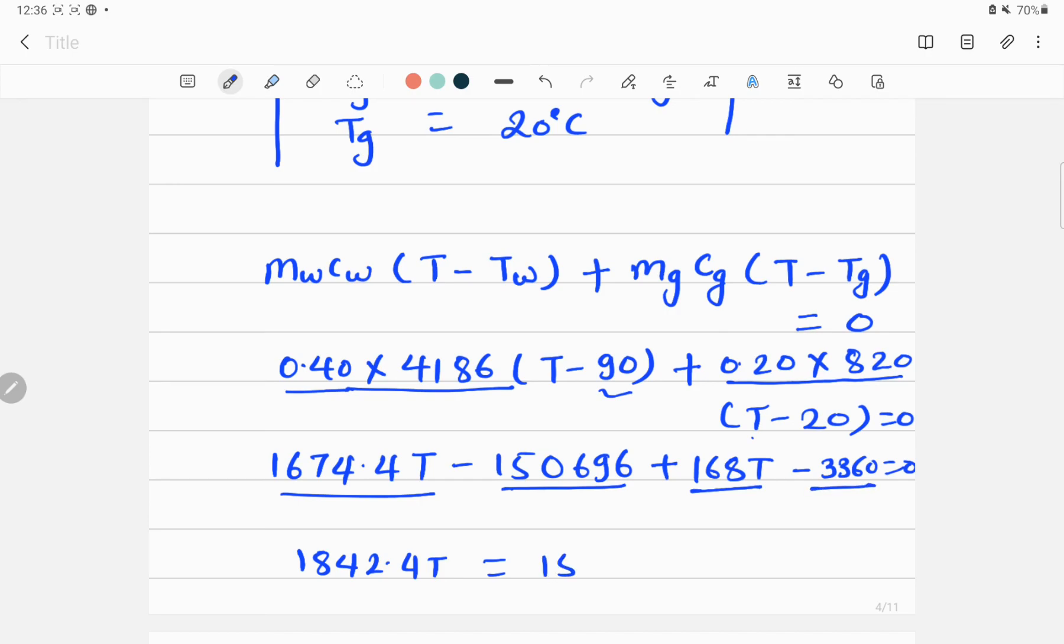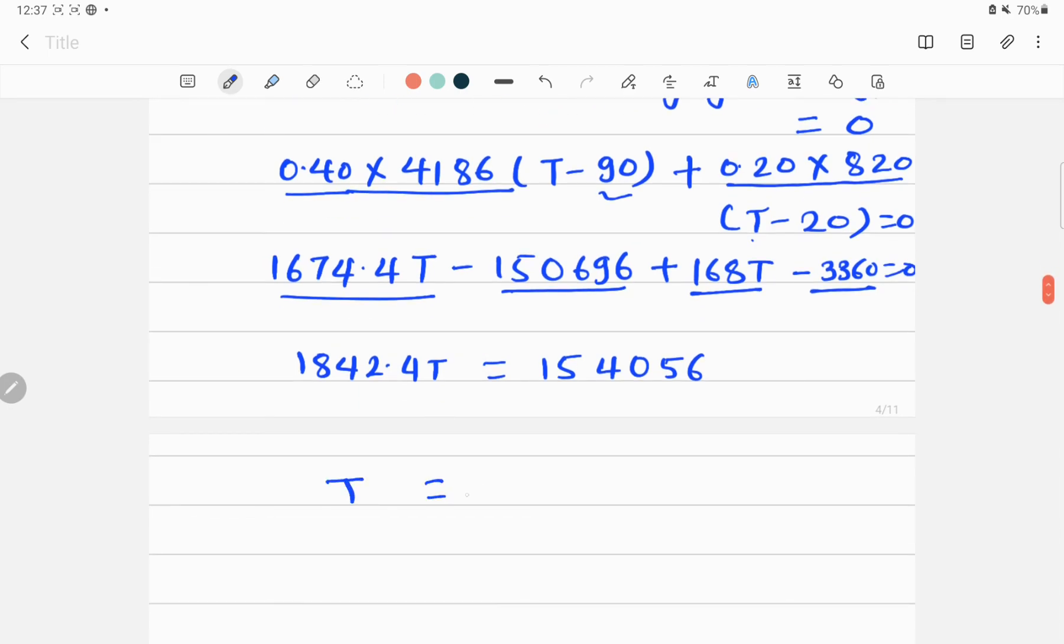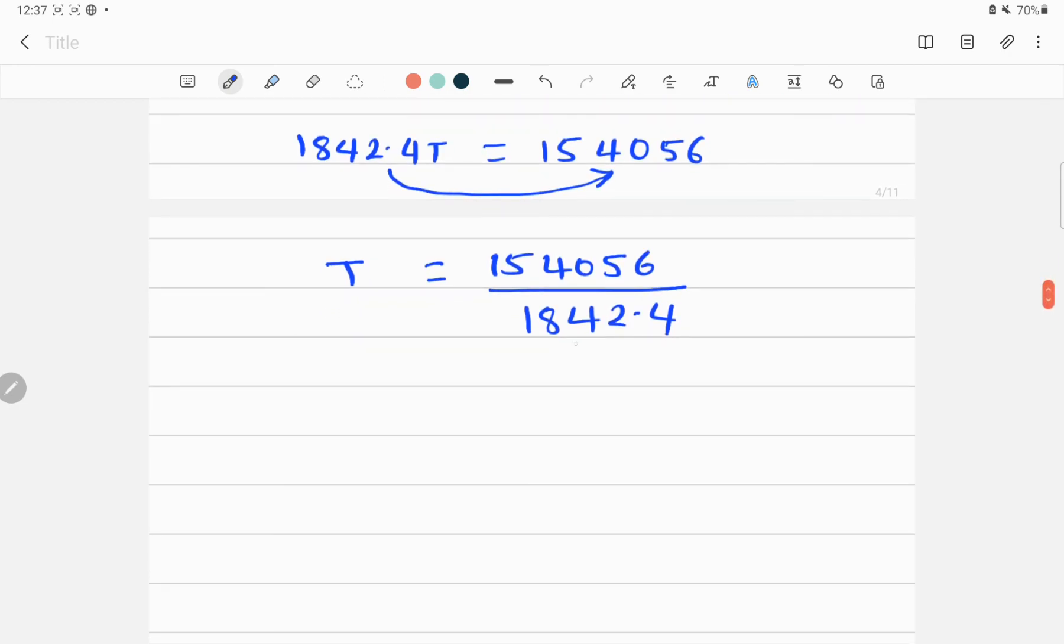And adding these two and taking to the other side will give me positive number which is 154056. So now I can rearrange these numbers, divide this number by here, and it will give me 154056 divided by 1842.4.